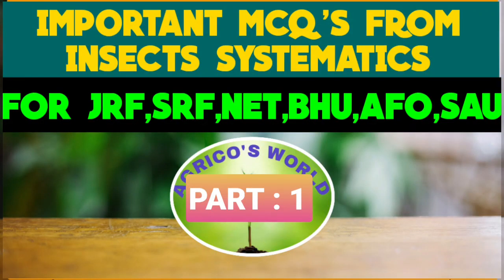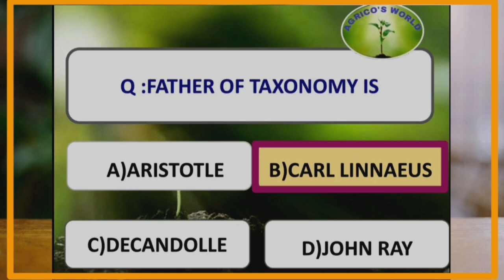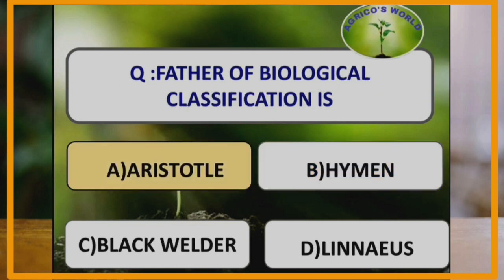Welcome to Agricose World. In this video we are going to discuss some important questions related to insect systematics. Father of taxonomy is Carl Linnaeus. Taxonomy is a branch of science concerned with classification, naming, and description of taxa. The term taxonomy was first proposed by the scientist DeCandolle. Father of biological classification is Aristotle. Classification is the ordering of animals into groups on the basis of their relationship.